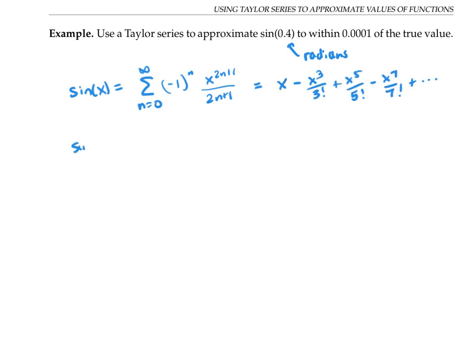So to find sine of 0.4 radians, we just plug in 0.4 for x. The exact value of sine of 0.4 could be found by adding up this infinite series, and an approximate value can be found by adding up a partial sum, just finitely many terms.